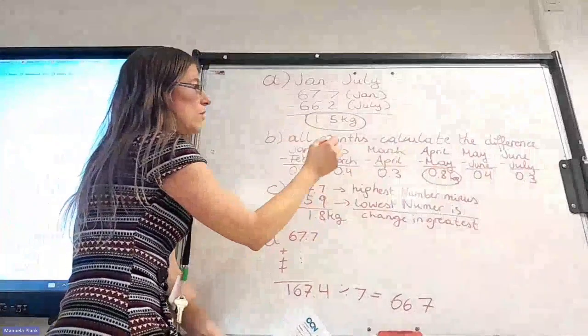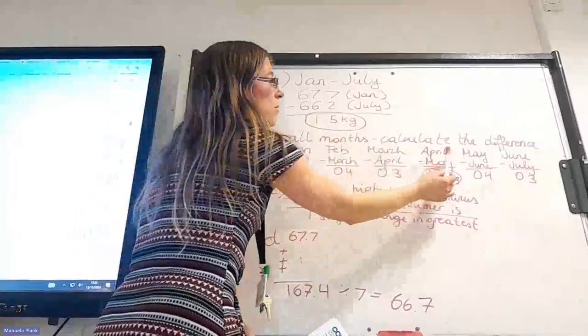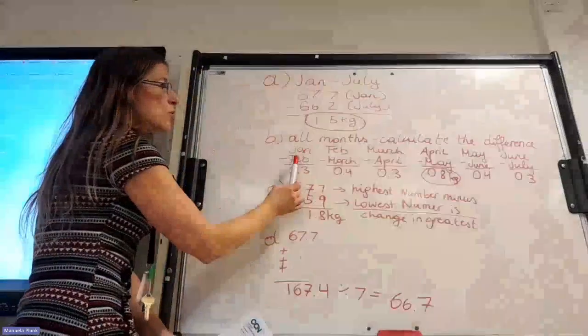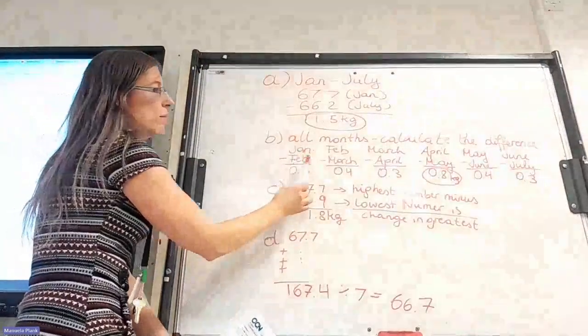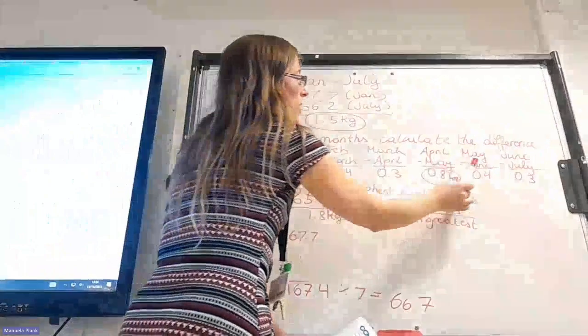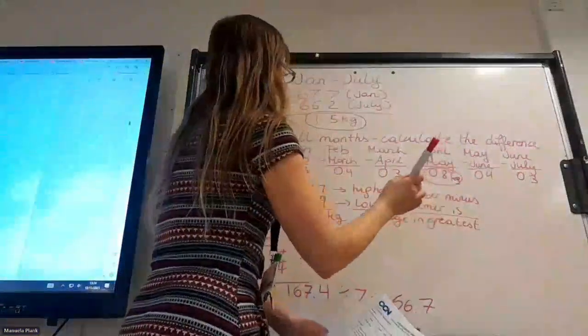So we go through January, February, March, April, May, and June. And below, you should just have the same months, but you start with February. February, March, April, May, June, July.